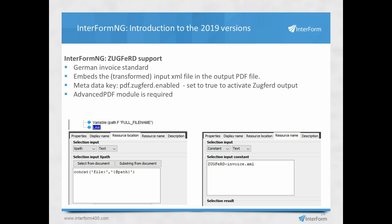SUGFAT support, previously available in Interform 400, is now coming to Interform NGE. SUGFAT is a German invoice standard — a PDF with an embedded XML. The real work is creating an XML file that fits the SUGFAT requirements, but business partners and Interform can help convert XML files into the right format. You define a link element referring to the XML file you want to embed. A special metadata key, pdf.sugfat.enable, set to true, suppresses the paperclip icon. You also need to specify a very specific resource name for the embedded file, and remember you need the advanced PDF module to use this SUGFAT option.